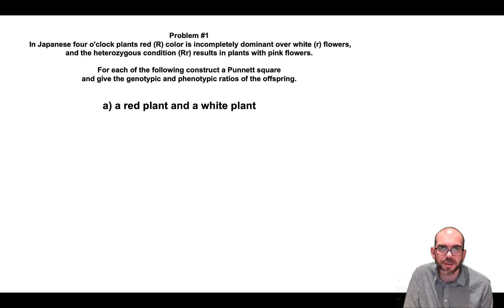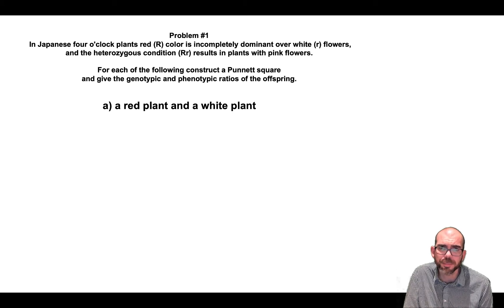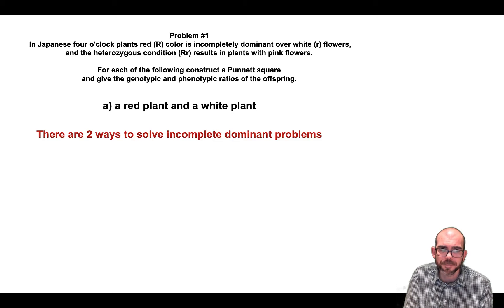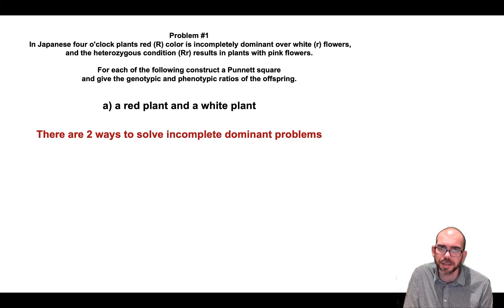Red color is incompletely dominant over white, or little r, flowers, and the heterozygous condition results in plants with pink flowers. For each of the following, construct the Punnett square and give the genotypic and phenotypic ratios of the offspring. Let's do a cross between a red plant and a white plant. There are two ways we can represent incomplete dominance squares.